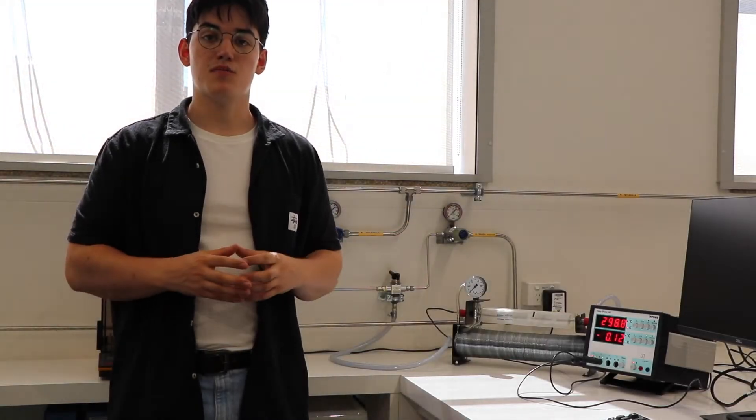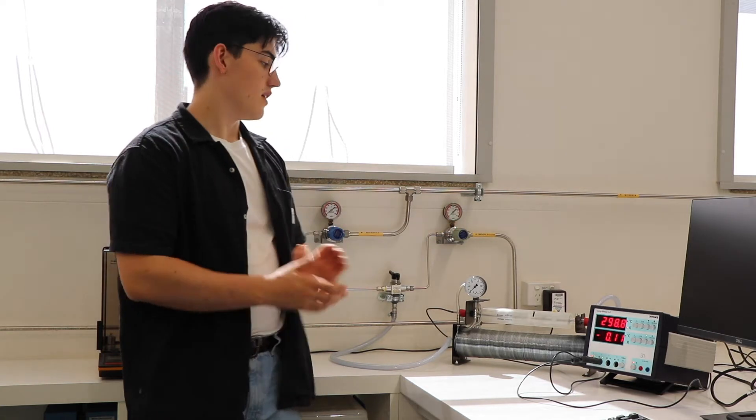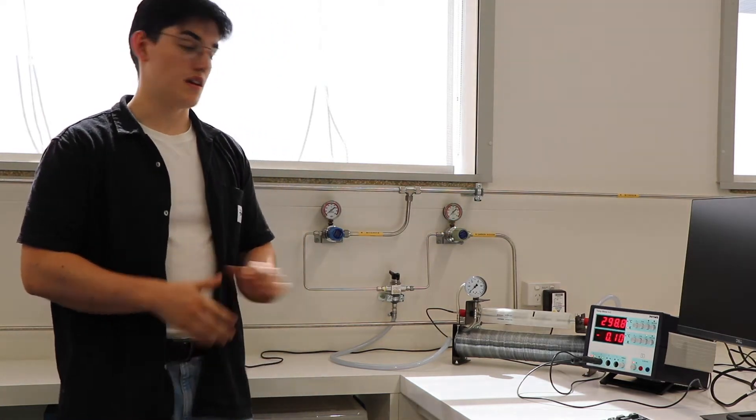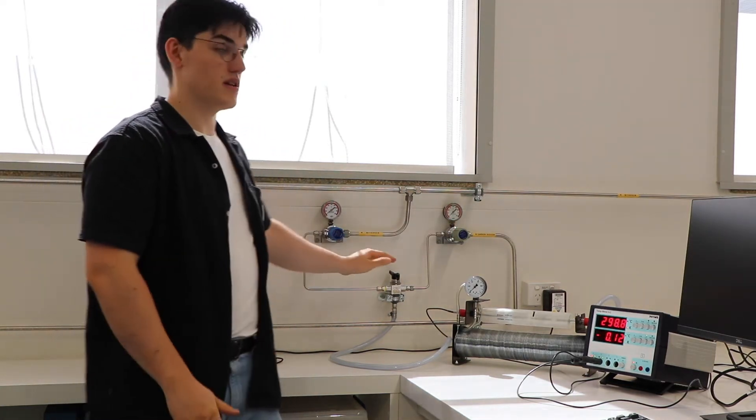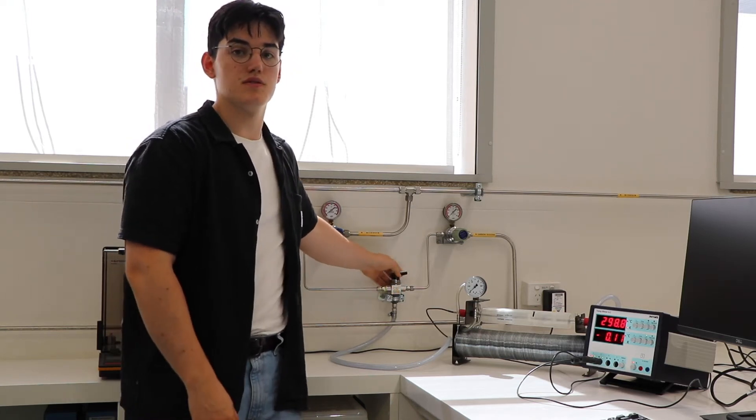Our experimental setup consists of two gas supply valves, which we can use to vary the pressure in our tube, as well as a gas selector valve. This allows us to select which gas we're going to be using for each experiment.